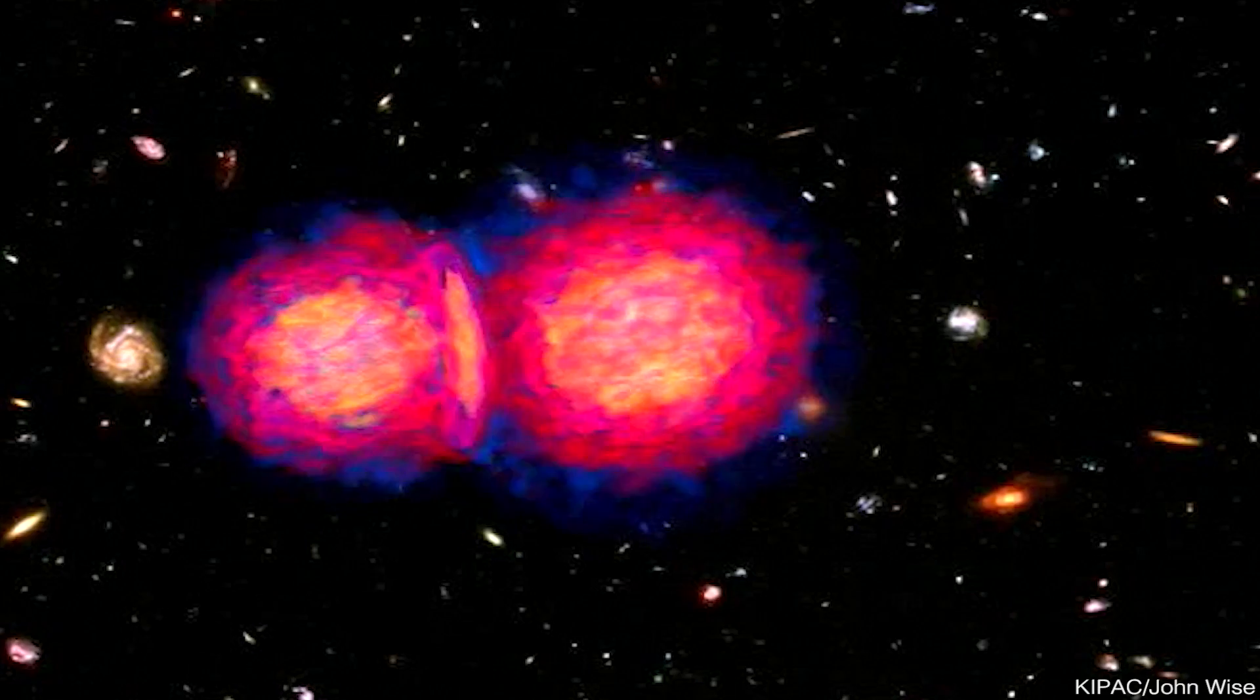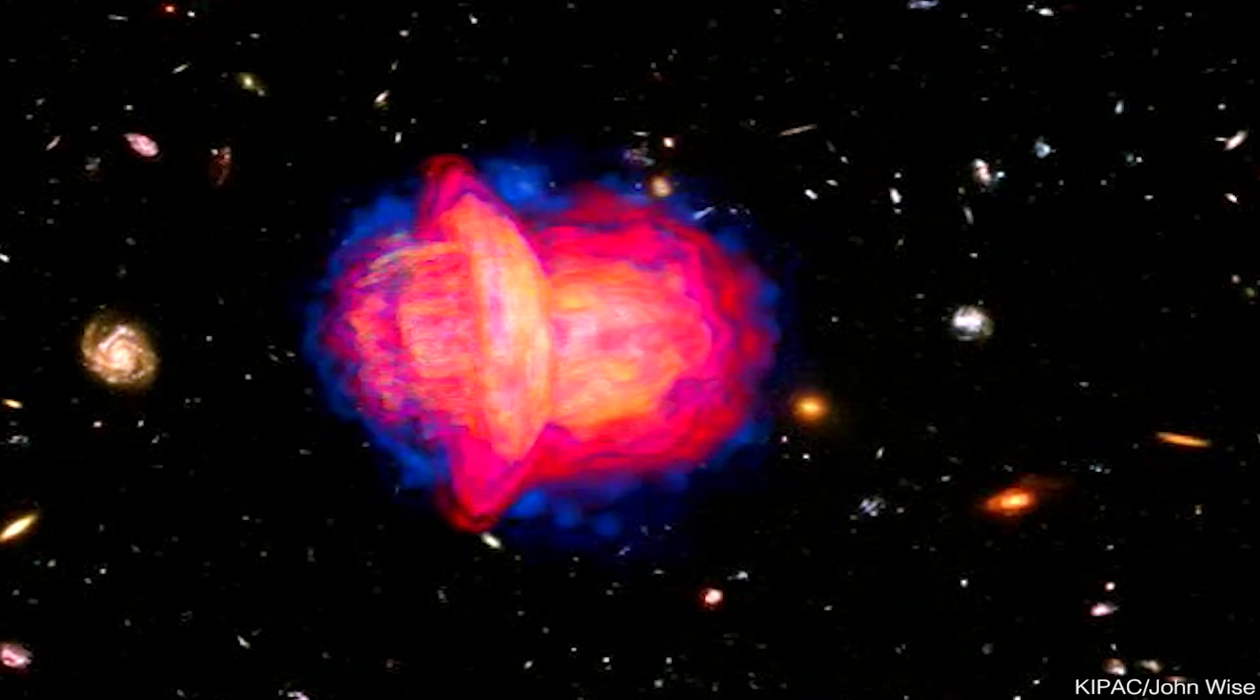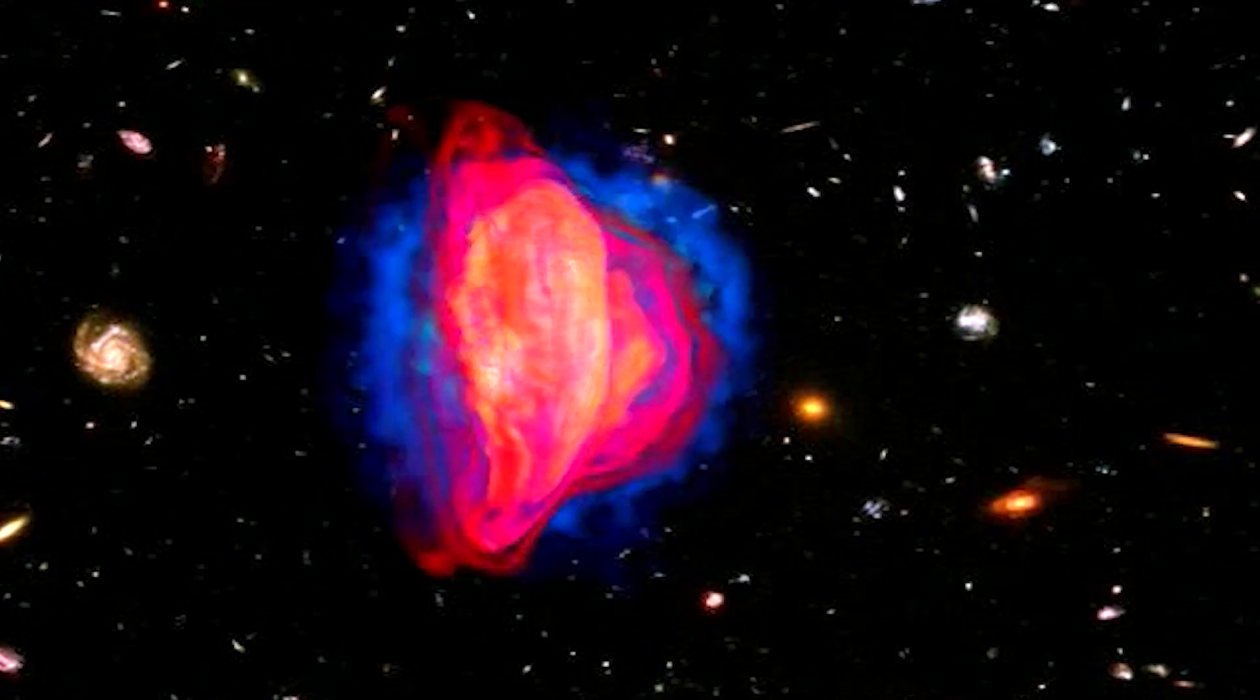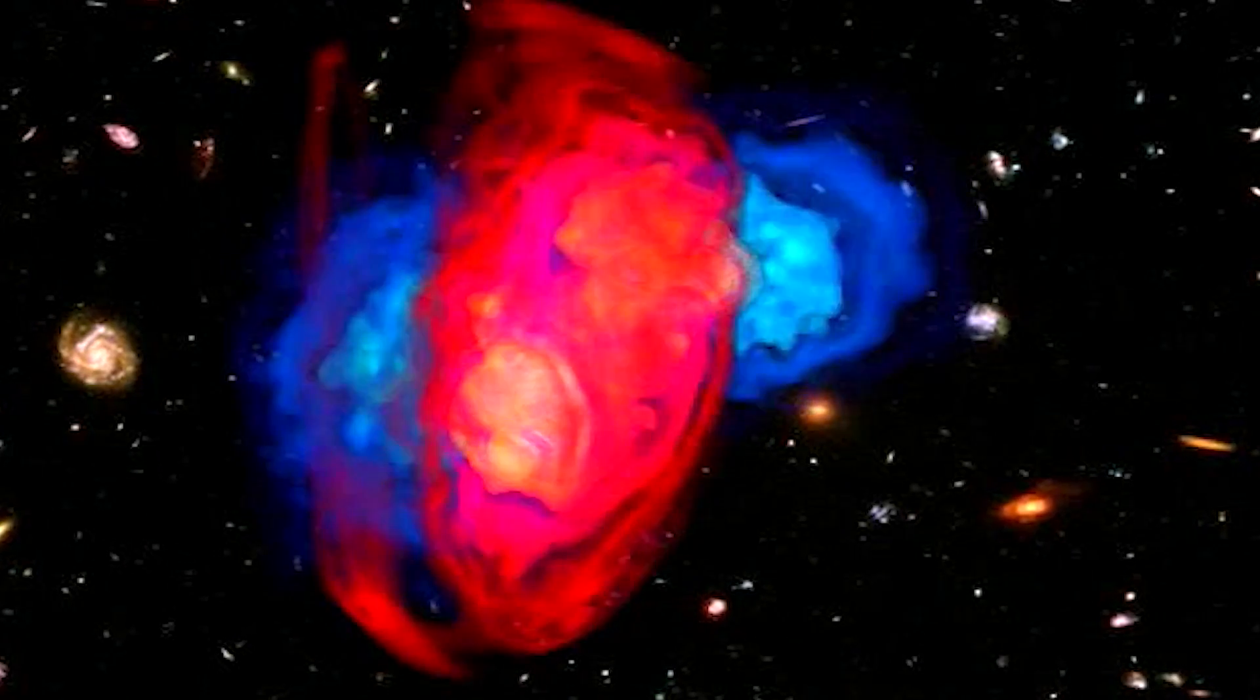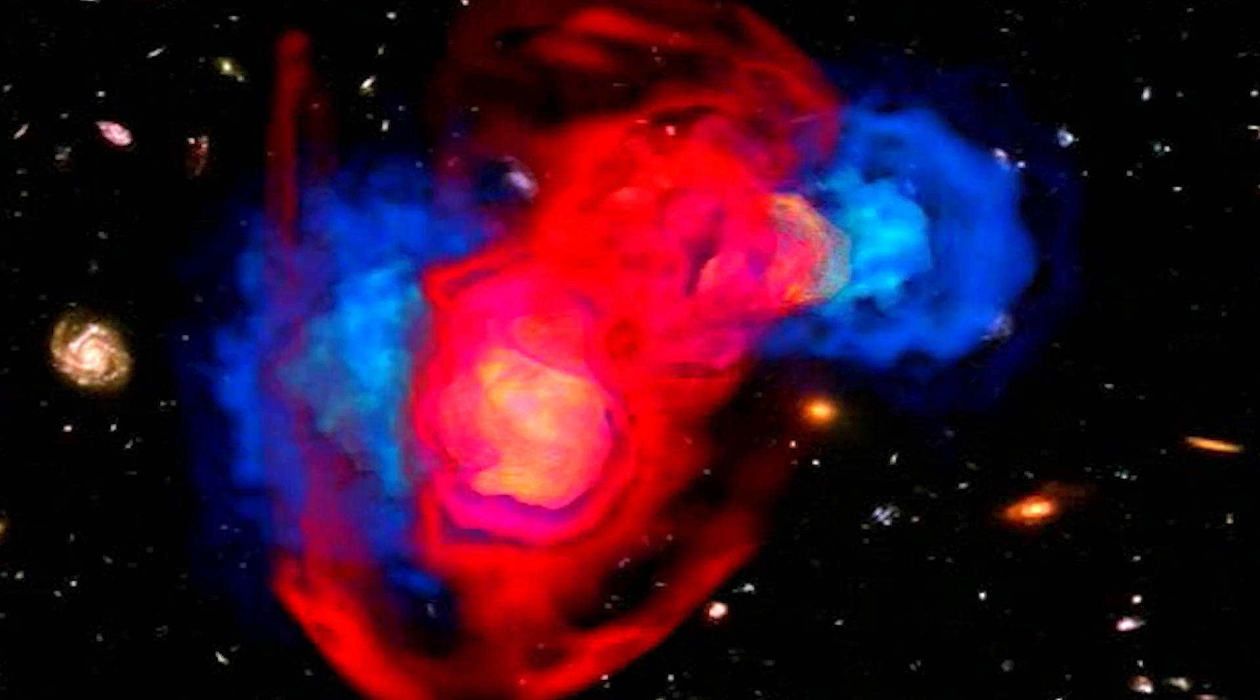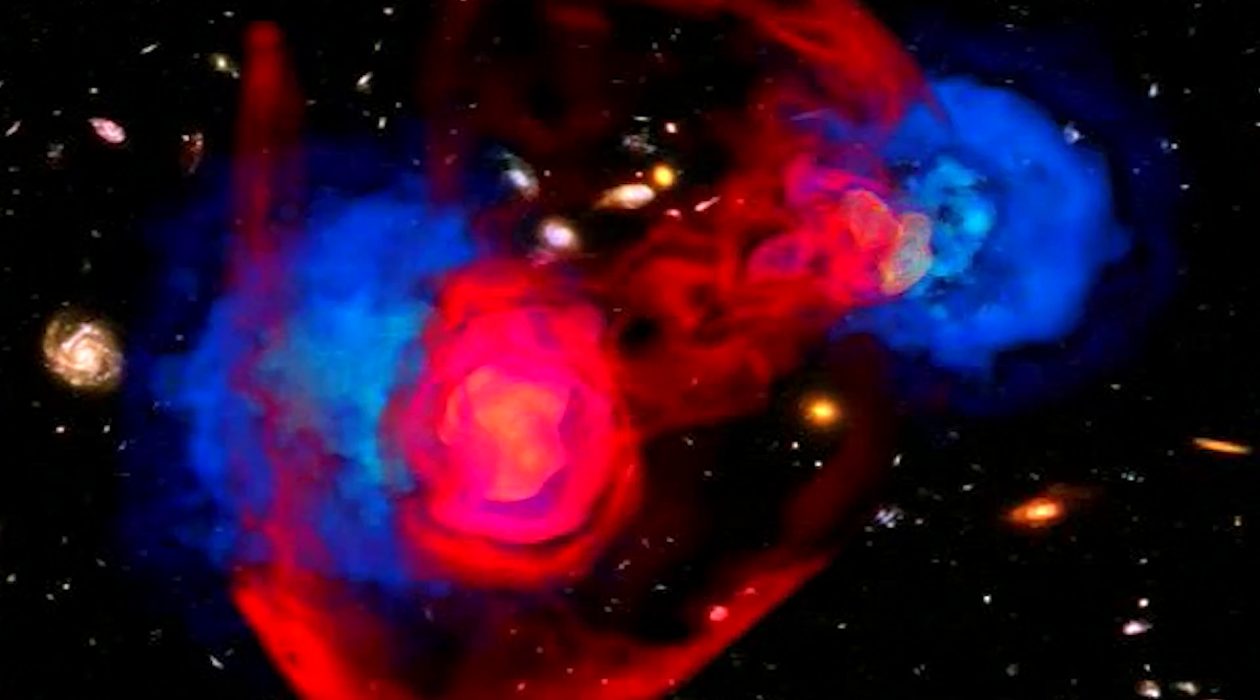When the galaxy clusters collide, they pass through each other because the galaxies are just so far apart. It's mostly empty space, so they pass straight through. But the mass also follows that. It's passed right through. It hasn't shocked like the gas.